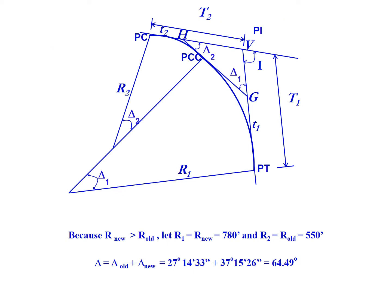Starting with our drawing, what does this compound curve look like? We know that the new curve is larger and it comes in the second half. So our old curve is first—it ties in at the PC.